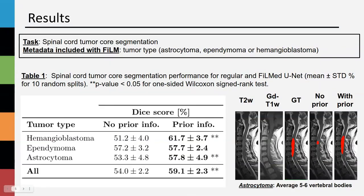For the spinal cord tumor segmentation task, we had a total of three different tumor types used as metadata. The first column presents results for the model trained with FiLM but without information on the tumor type. When training with the tumor type, the overall segmentation performance improved. The example shown is a case of an astrocytoma, which on average expands across five to six vertebral bodies. In this particular example, where the tumor boundaries are not clear, the model without prior knowledge of the tumor type segmented only the most enhanced part of the tumor on the T2-weighted scan. Astrocytomas are usually larger than the prediction made by the model that lacked tumor type knowledge. When knowing the tumor type, the model was able to make a better prediction reflecting the features of this particular tumor.